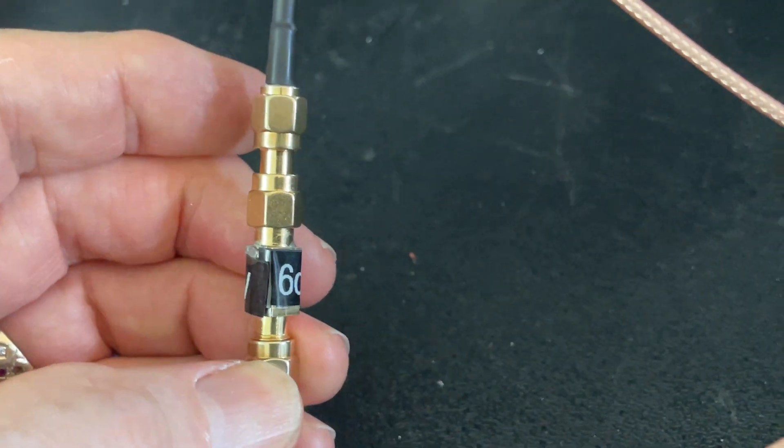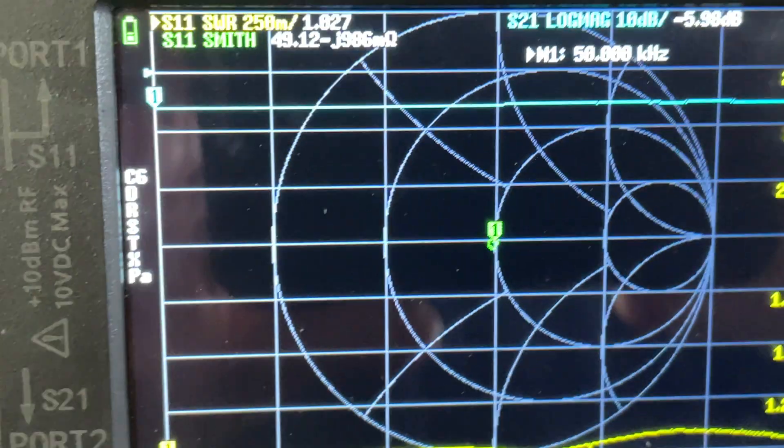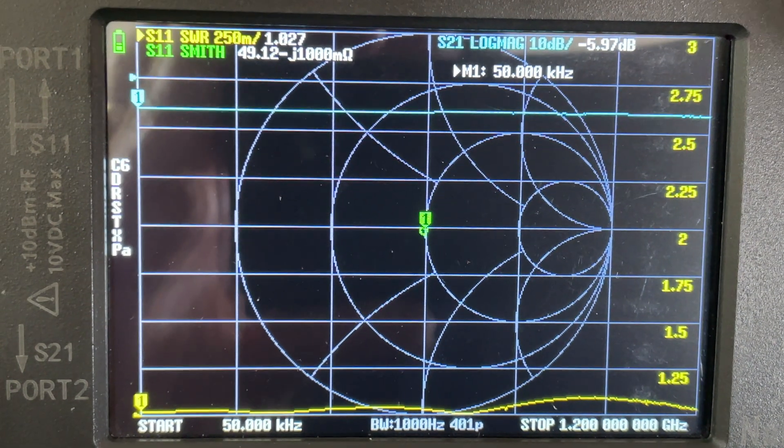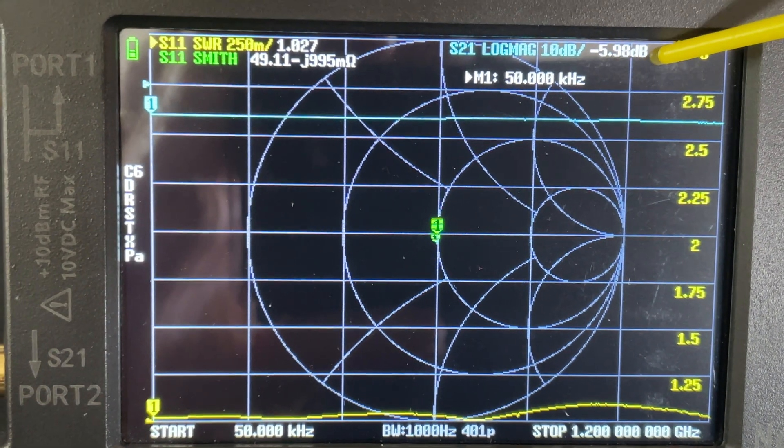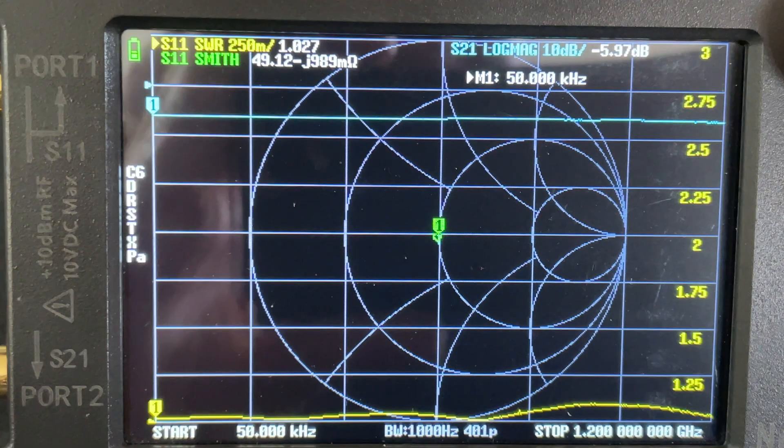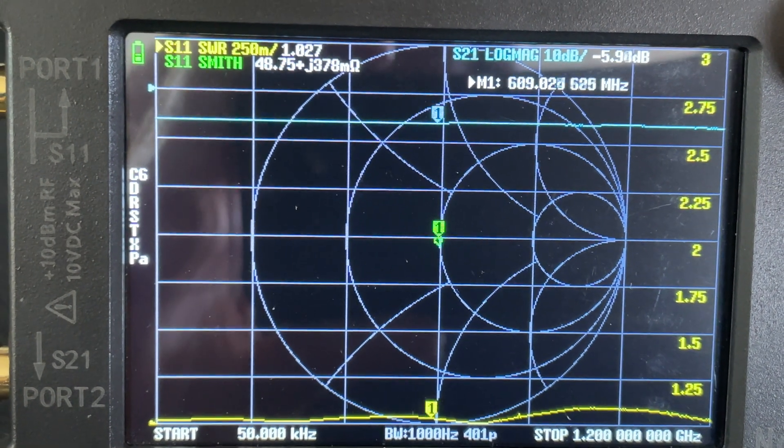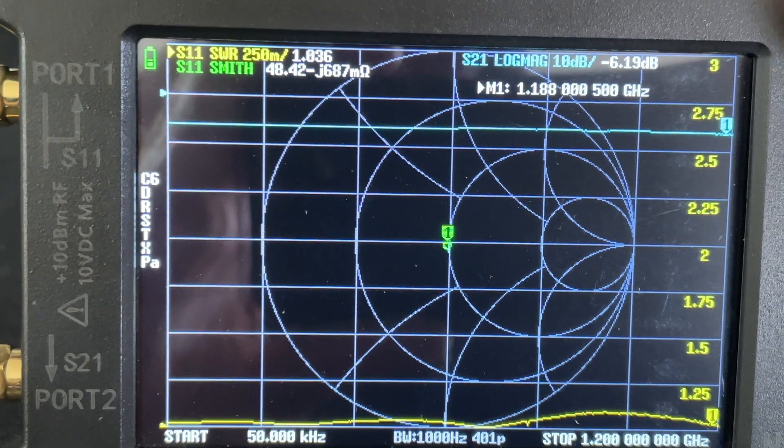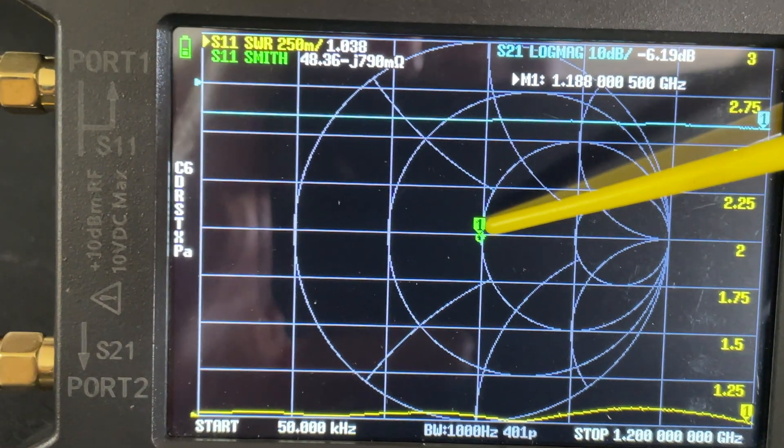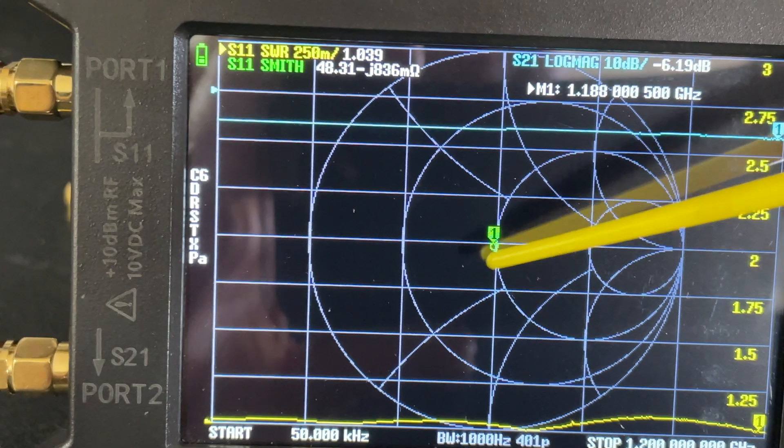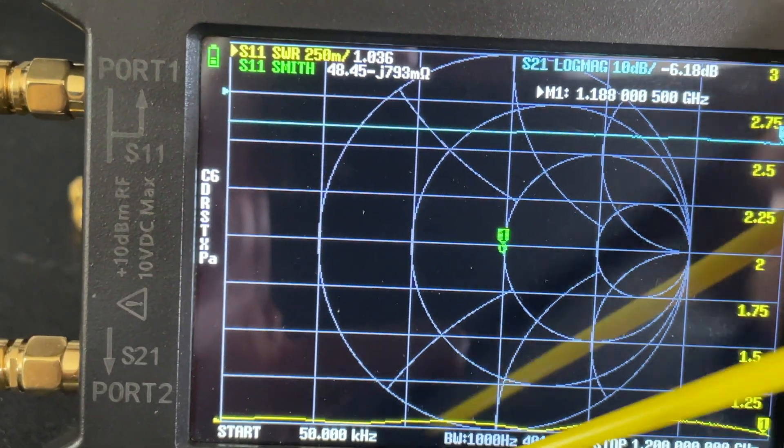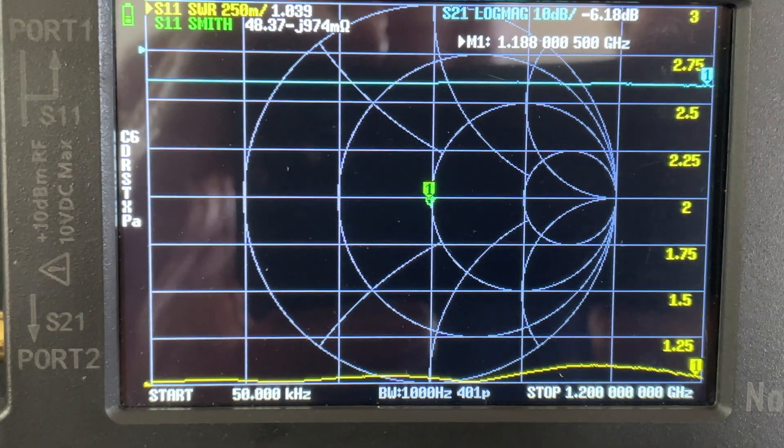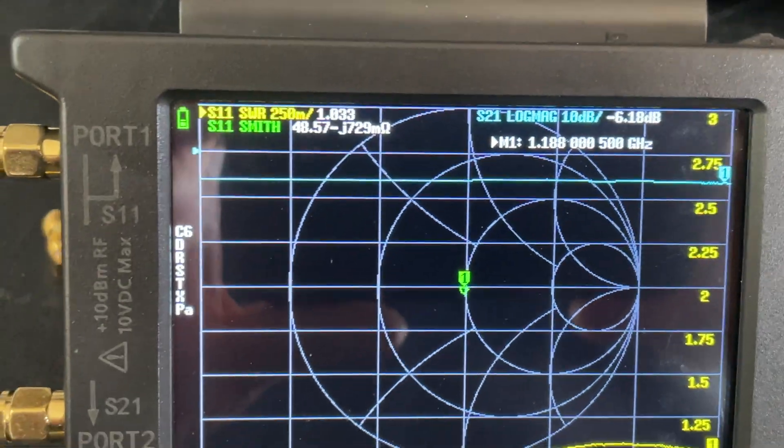Here's our 6 dB pad. Let's take a look at that. We have 5.97 on the S21 log mag. It's pretty much 6 dB. It goes up a little bit here. Not much. Very close to 6 dB. And again, close to our 50 ohm resonant area. Very low SWR. Looking good so far. Let's try and go to 10 dB.